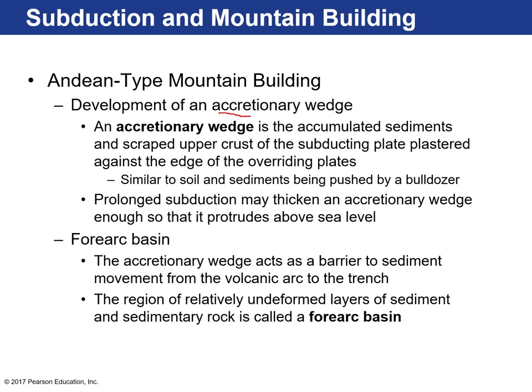The accretionary wedge is the area in the forearc — accumulated sediments scraped off the upper crust of the subducting plate. The subducting plate basically plasters that material on the edge of the continent, very similar to sediments being pushed onto the blade of a bulldozer. With prolonged subduction over millions of years, you can thicken that accretionary wedge until it protrudes beyond sea level, becoming coastal mountains. It acts as a barrier to sediment moving from the volcanic arc to the trench, leaving undeformed sediment layers in the forearc basin.